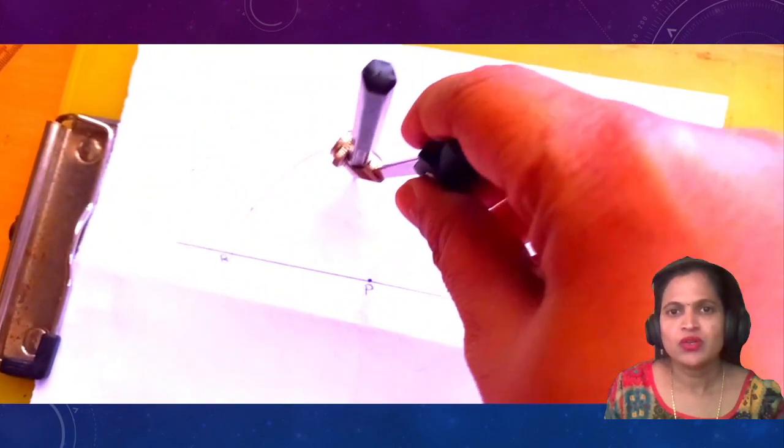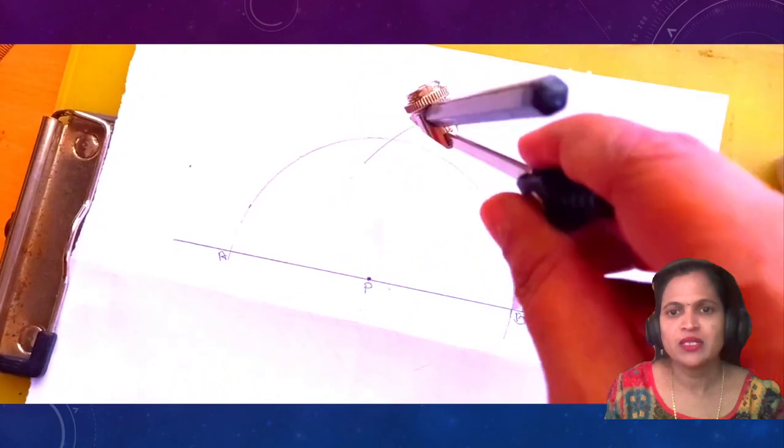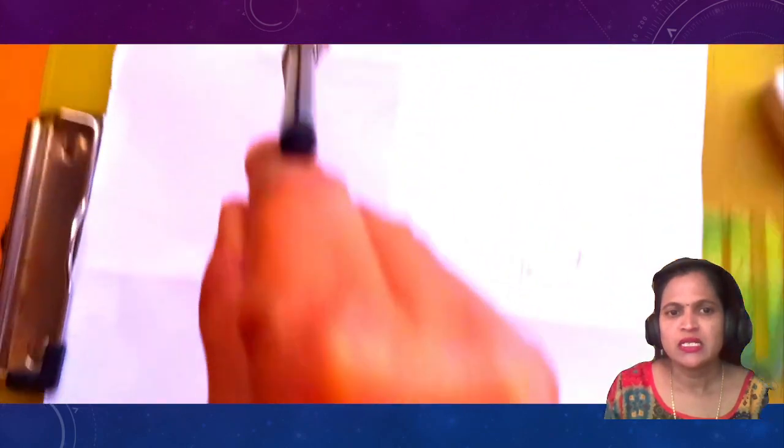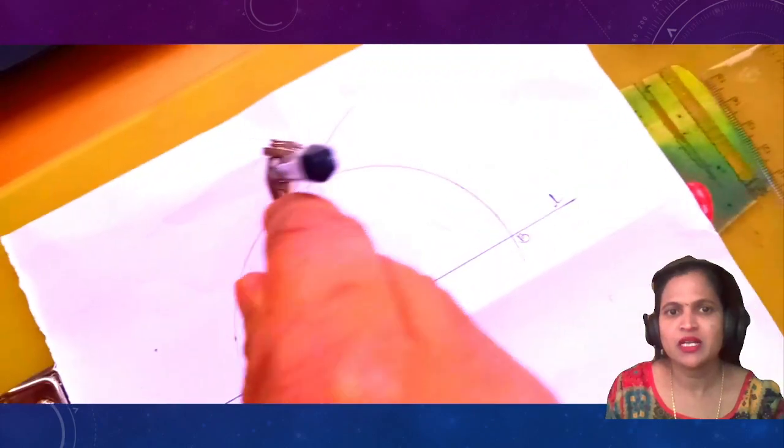Now, draw an arc here keeping at point B, and another needle keeping on A, draw the other arc which will intersect the first arc.